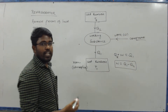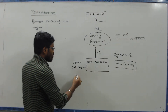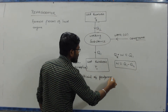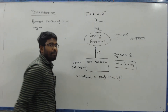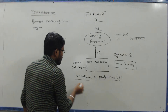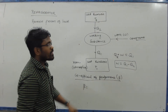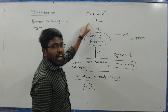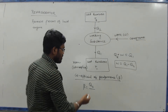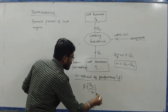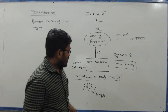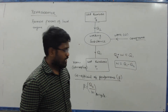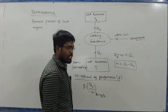The Coefficient of Performance — denoted Beta — is the Coefficient of Performance of a refrigerator. It is the ratio of heat extracted from the cold reservoir to the work done on the working substance per cycle. This is the Coefficient of Performance.